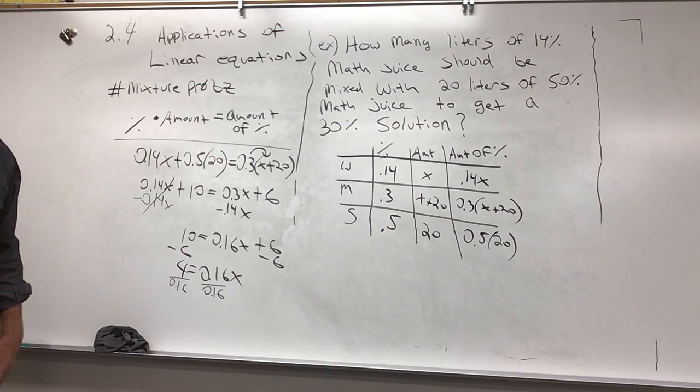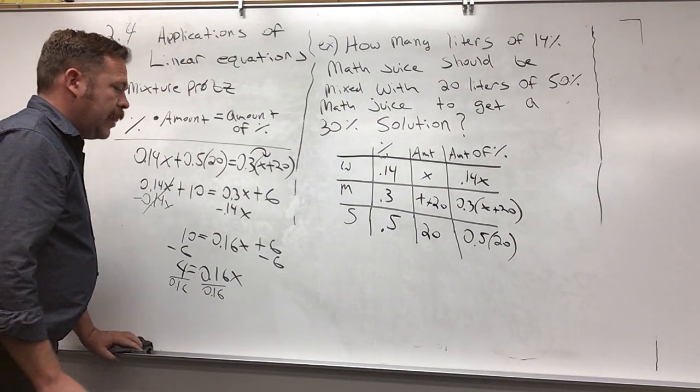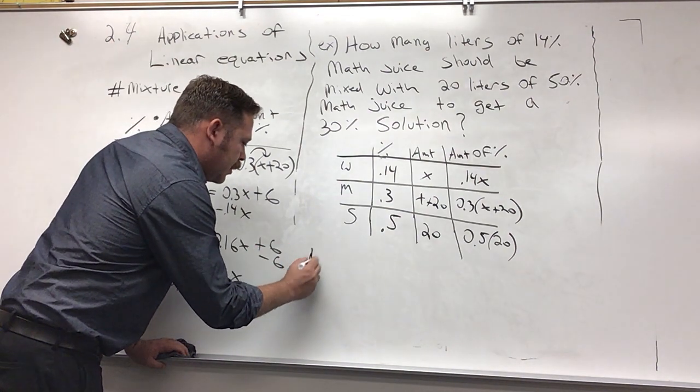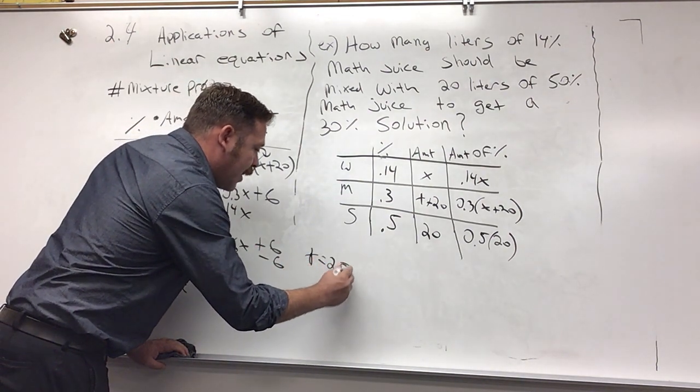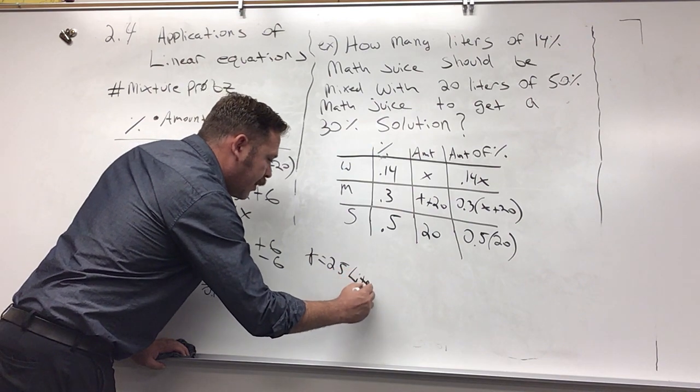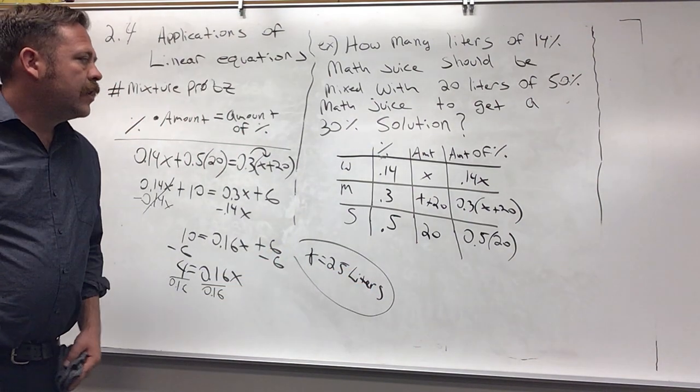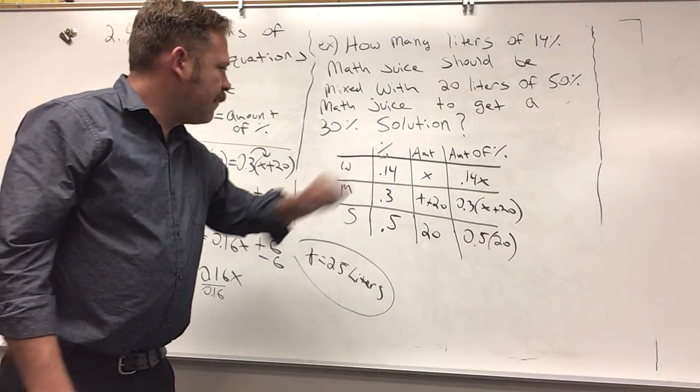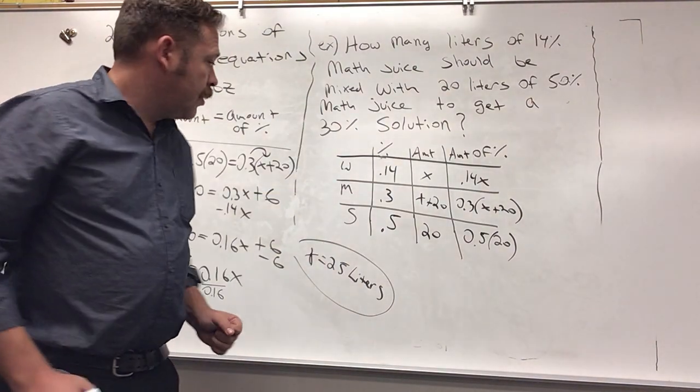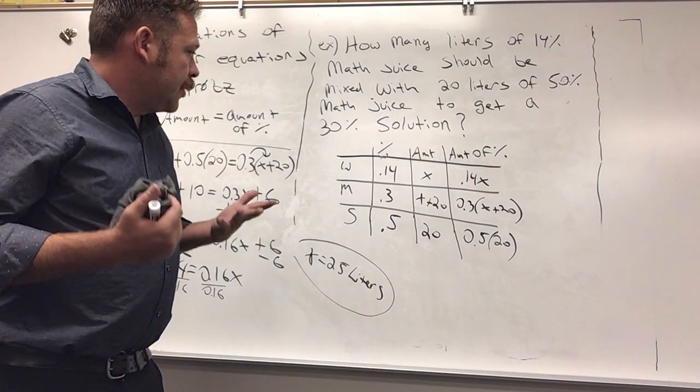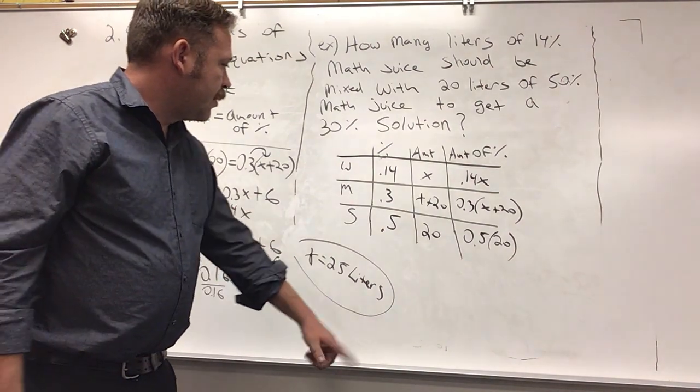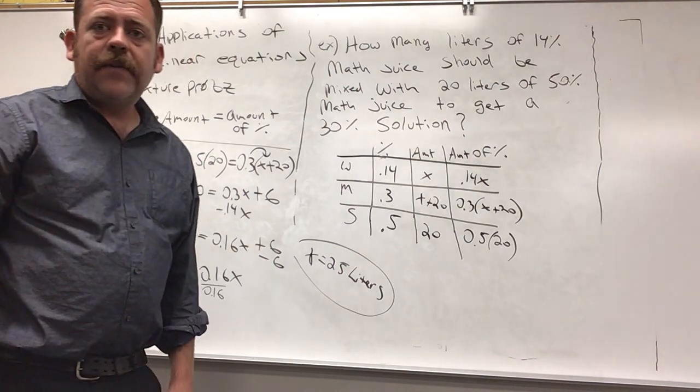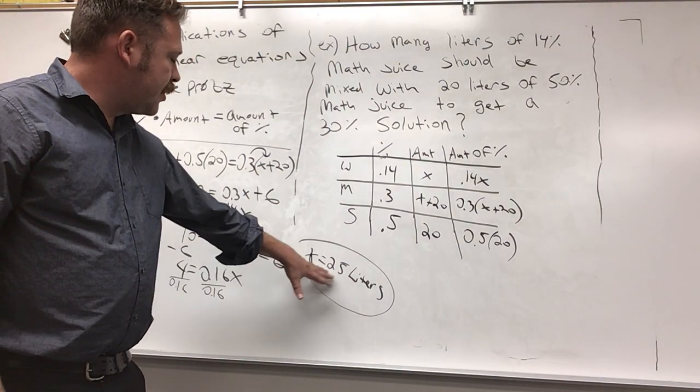And I get 25, so x equals 25 liters is my unit. 25 liters. Now let's check for reasonableness. Is 25 liters a reasonable amount of a substance to mix with 20 liters? It seems fine to me.